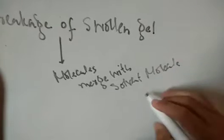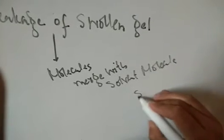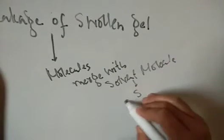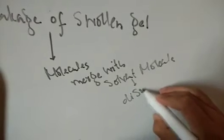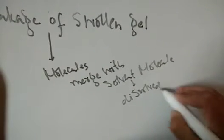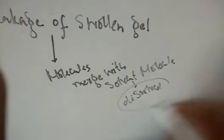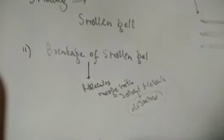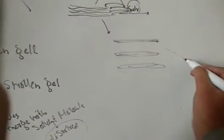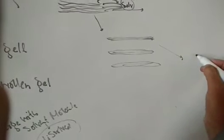Hence the polymer chains get dissolved. Finally, you have the dissolved polymer — a polymer solution is formed. So the chains get broken down from the swollen gel and finally you have a complete polymer solution.